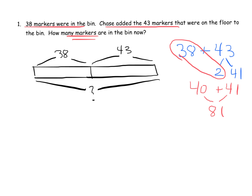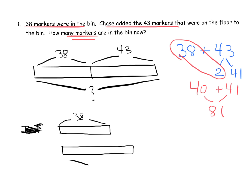So our answer is 81 markers — ideally written in a complete sentence. There are other valid tape diagrams students could have drawn. For example, they might draw 38 on one bar and then 43 on an extended portion, with the question mark indicating the total. Either way, any accurate tape diagram representation is perfectly fine.